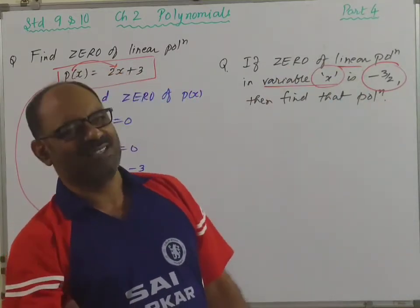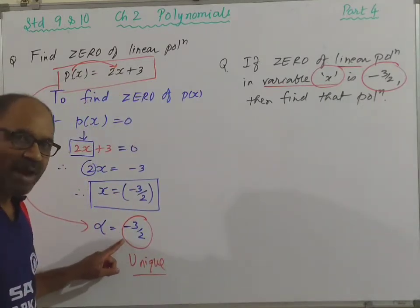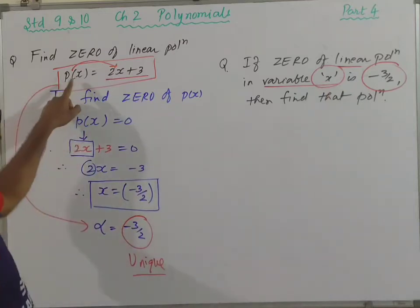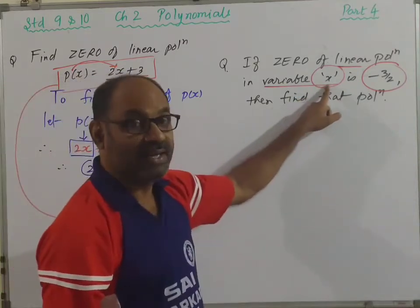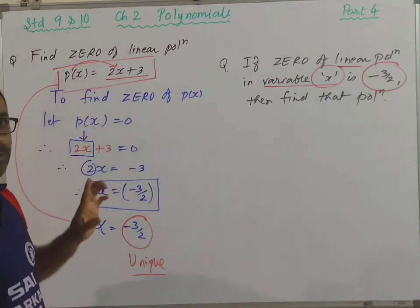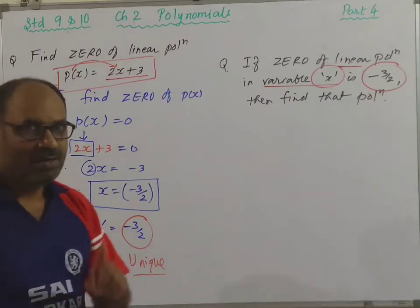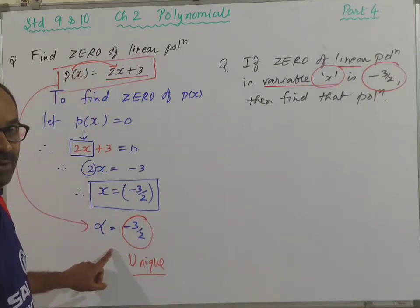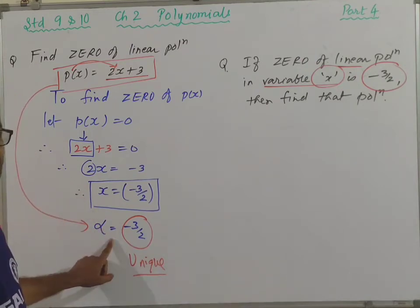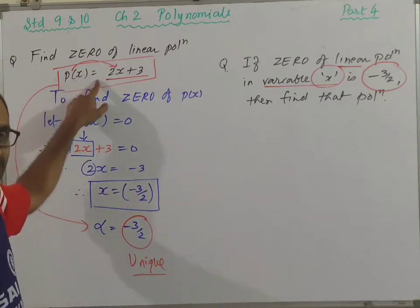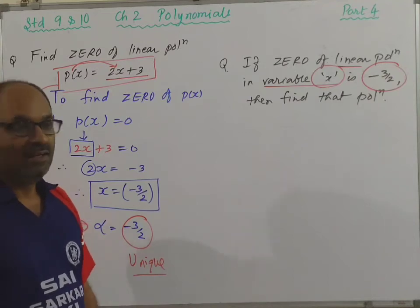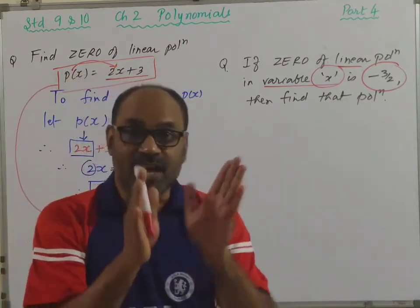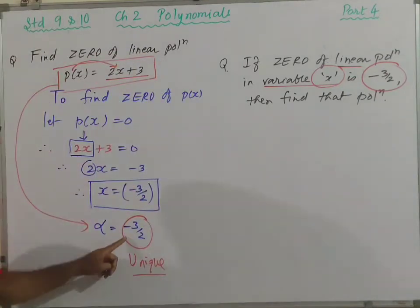You will say: the polynomial whose zero is -3/2 is p(x) = 2x + 3. If we change the variable to y, then p(y) = 2y + 3. If the variable is t, then p(t) = 2t + 3 — whose zero is also -3/2. But pay attention: if -3/2 is a zero of a linear polynomial, which is that linear polynomial? Not just this one — there are infinitely many polynomials whose zero can be -3/2.